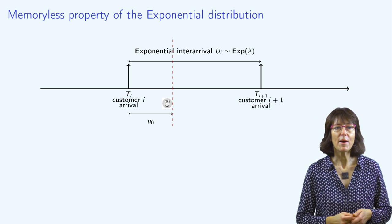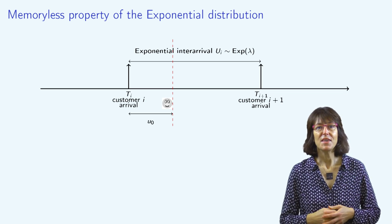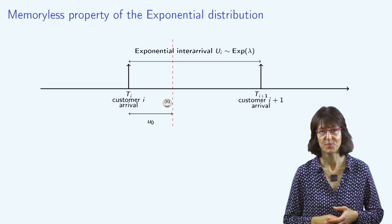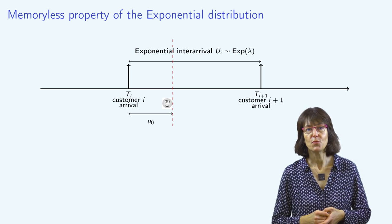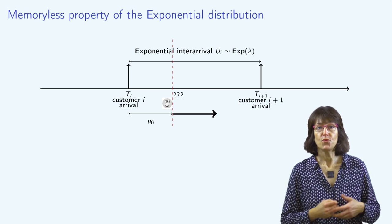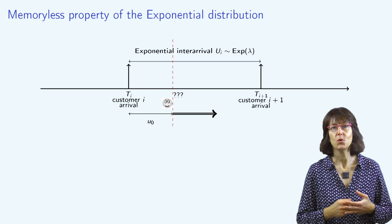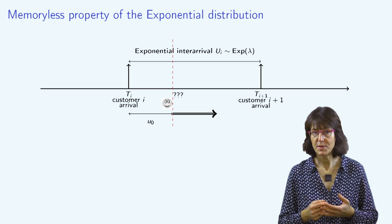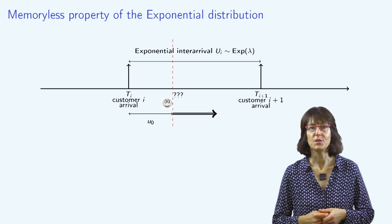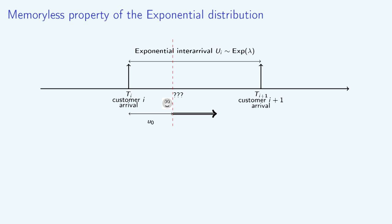Now let's go back to our customers. If they arrive according to a Poisson process, then the interarrival time between two consecutive customers is an exponential with parameter lambda. Assume that an external observer knows that the last customer arrived U0 time units ago. From the point of view of this observer, the time until the next customer arrives is distributed according to an exponential distribution with parameter lambda. Knowing that the last customer arrived U0 time units ago does not bring any useful information to predict when the next customer will arrive.